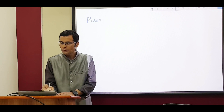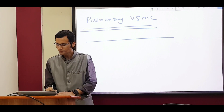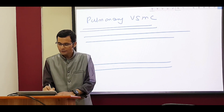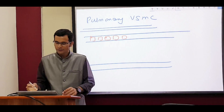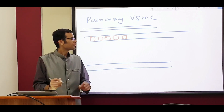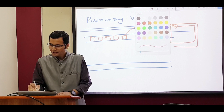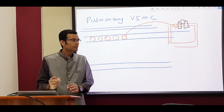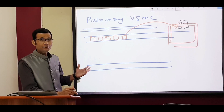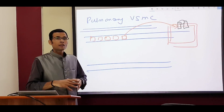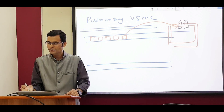In the lungs, the pulmonary vascular smooth muscle cells lining the blood vessels contain an O2-sensitive potassium channel in their membrane. If we magnify this smooth muscle cell, in its membrane there is this O2-sensitive potassium channel. Upon hypoxia, this O2-sensitive potassium channel will close — it cannot remain open because there is lack of oxygen and therefore lack of ATP. So the O2-sensitive potassium channel closes because of hypoxia.